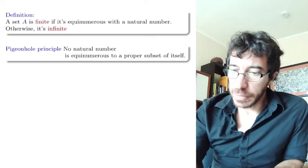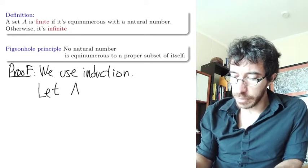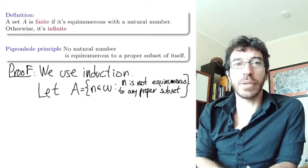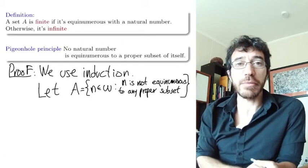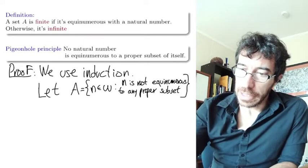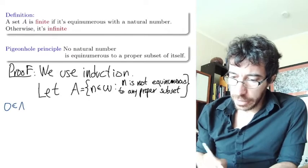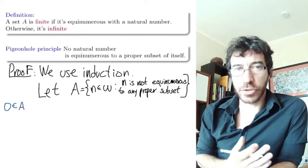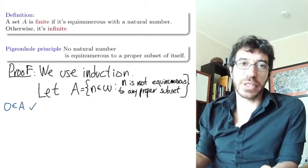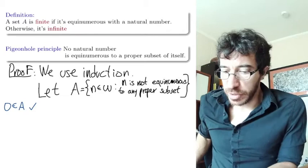The proof is by induction. The way we use induction is: we define the set of all things that have the property we want, then prove that set is inductive. So we consider the set A of all n's which are not equinumerous to any proper subset of themselves, and we want to show this set contains all natural numbers. Zero belongs to A because zero is the empty set and has no proper subsets, so this is trivially true.